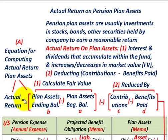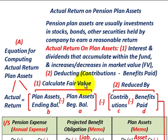The actual return equals two main components. First, we have to calculate the fair value of those securities within the funds, and then that is going to be reduced by the difference between the contributions and the benefits paid.